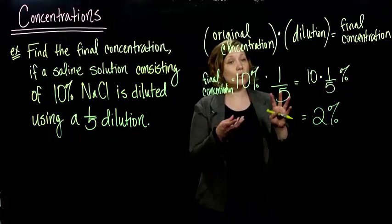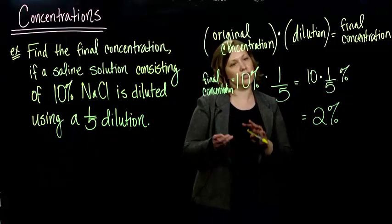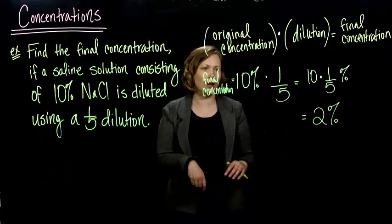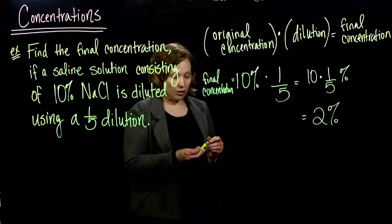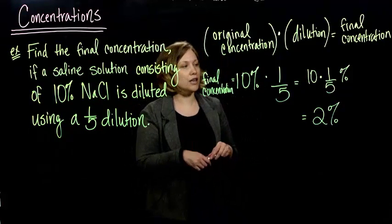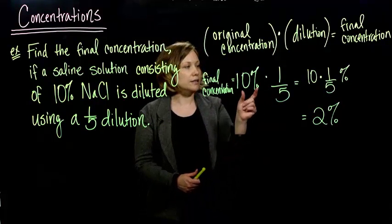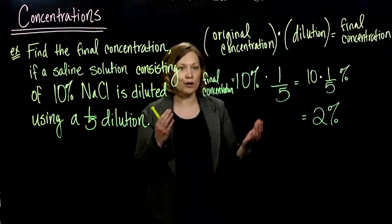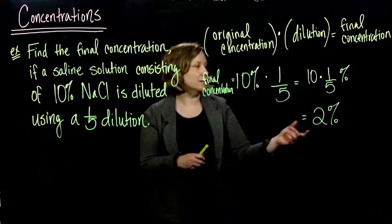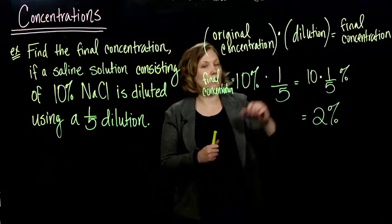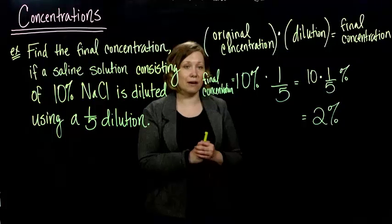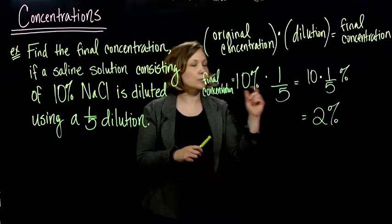So, you could have changed that 10% to a fraction and then changed it back to a percent, but that's a lot of work. So, to find our final concentration, you take your original concentration, multiply it by your dilution. 10% of 1 fifth of our new mixture is going to be what we have, the amount of sodium chloride that we have in our final mixture. So 2%.